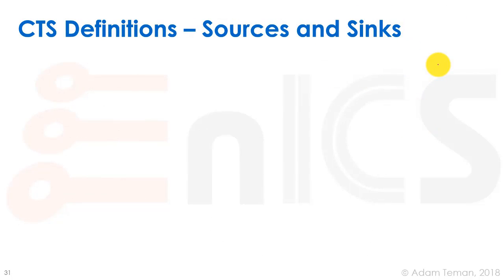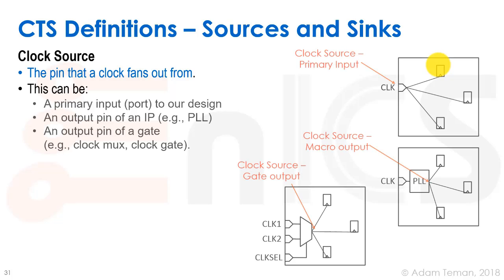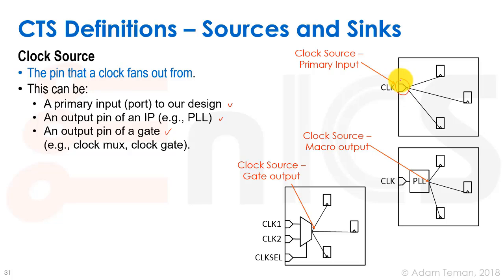A clock source is the pin that the clock fans out from. It can be a primary input to our design, an output pin of an IP such as a PLL, or an output pin of a gate such as a clock mux or clock gate. For example, a clock port coming into the design can be a clock source; the output of a PLL driving the clock can be a clock source; or the output of a clock mux selecting between two different clocks can be defined as the clock source.